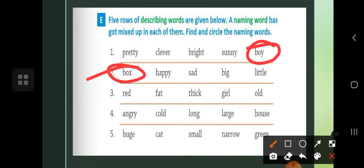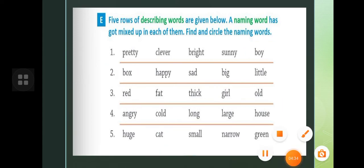Red, fat, thick, girl, all. Here girl is a naming word. Angry, cold, long, large, house. House is a naming word. Hughes, cat, small, narrow, green. So here cat is a naming word. So you will circle the naming word. Okay.